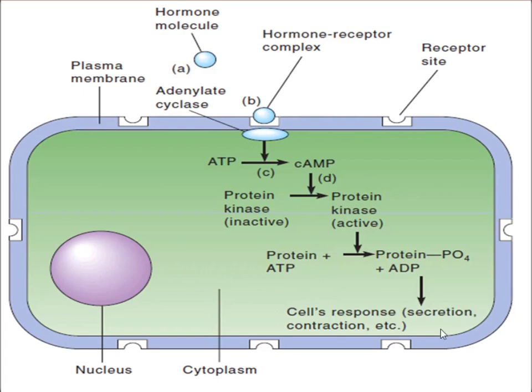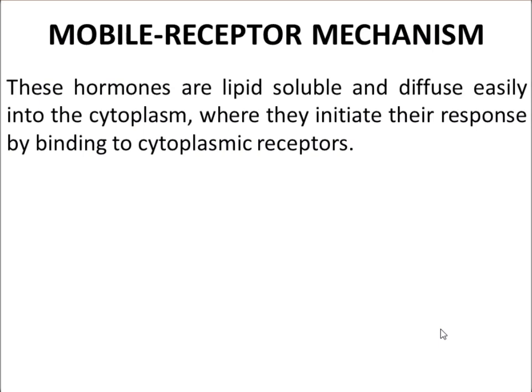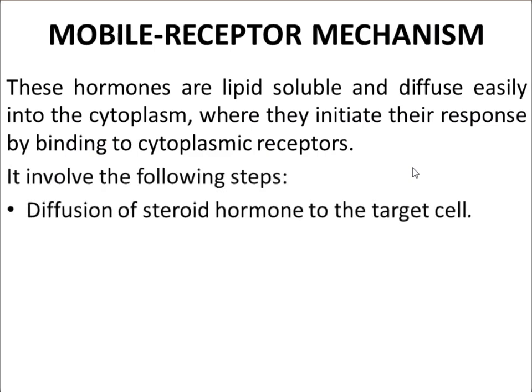Now the mobile receptor mechanism: in this mechanism, the hormones are lipid soluble and can easily diffuse into the cytoplasm, where they initiate their response by binding to a cytoplasmic receptor. It is called the mobile receptor mechanism because the hormones can cross the plasma membrane, as they are lipid soluble, with no difficulty.